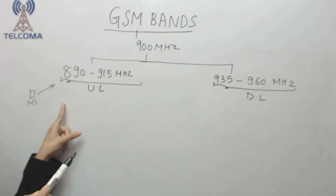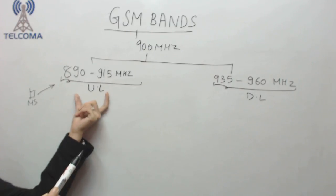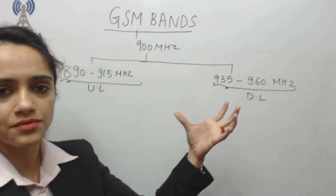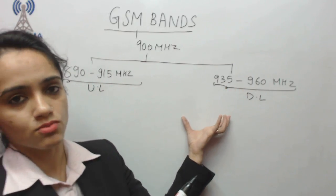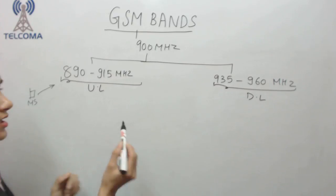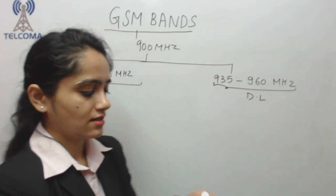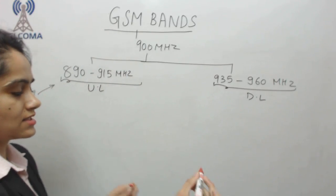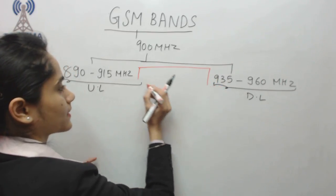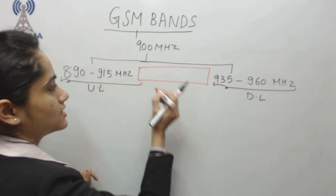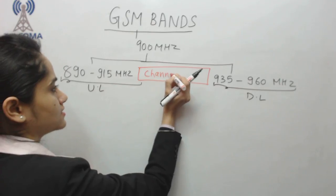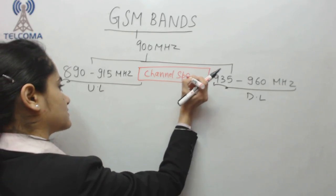We assign lesser frequency to uplink because the UE or mobile station has less power and needs to cover the distance to the network — lesser frequency covers more distance. The network has more power than the mobile station. The space between the uplink and downlink frequency ranges we call channel spacing.